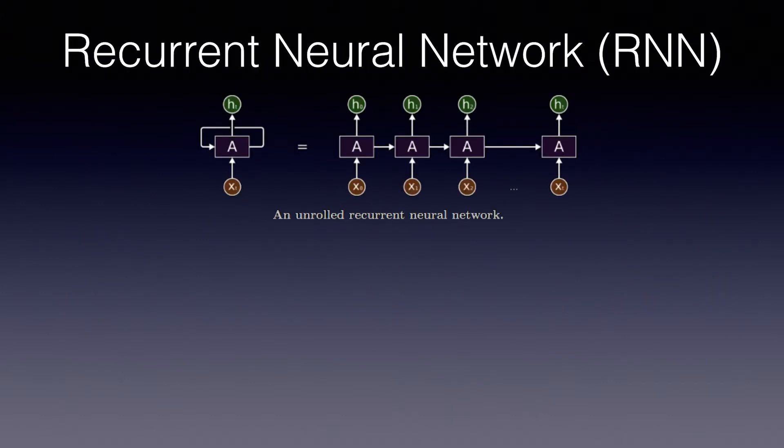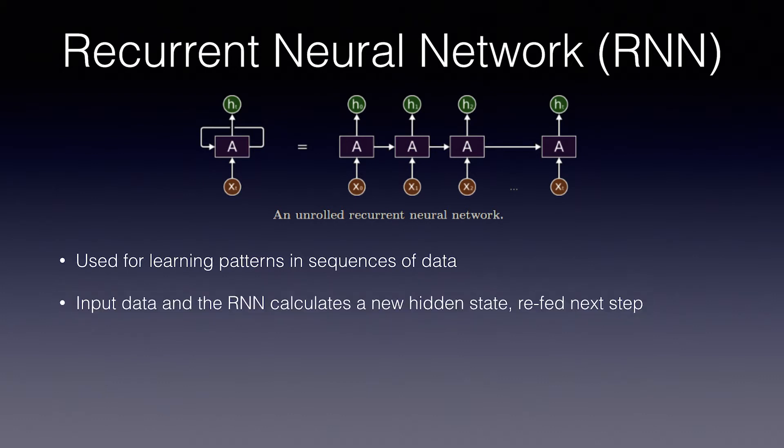The next concept to understand are recurrent neural networks, or RNNs. This is an entire course in itself, so I'm going to give you a very simplified explanation. RNNs are used for learning patterns and sequences of data and are especially useful with sequences of words. Basically, you input data one step at a time, and the RNN calculates a new hidden state, which is then refed at the next step. There are then trained functions which decide which inputs are important to store and which parts of the hidden state can be forgotten.